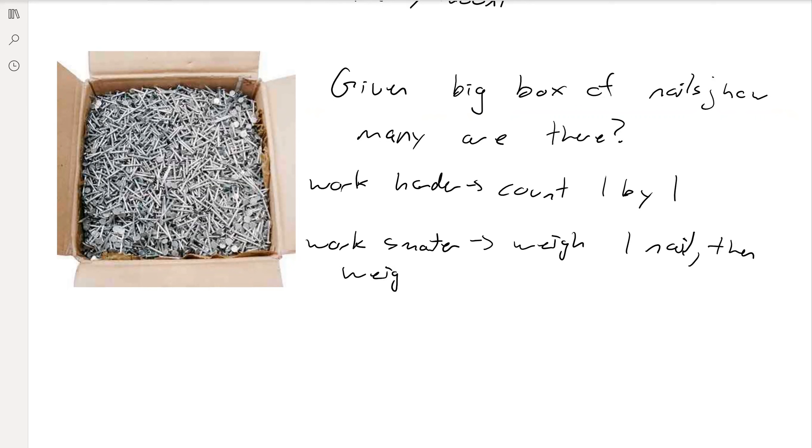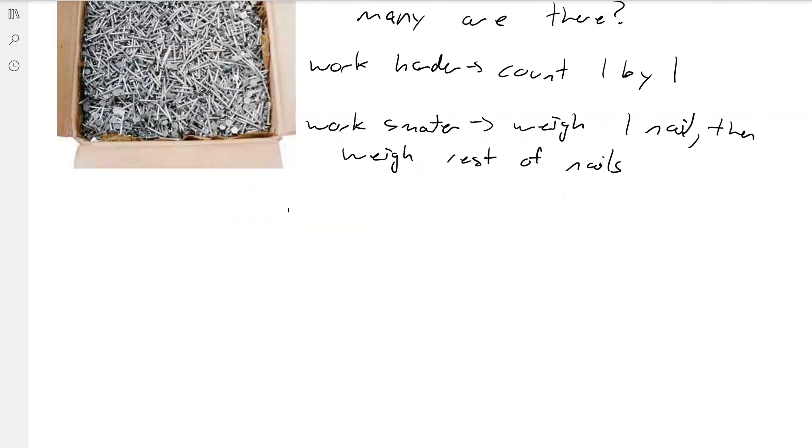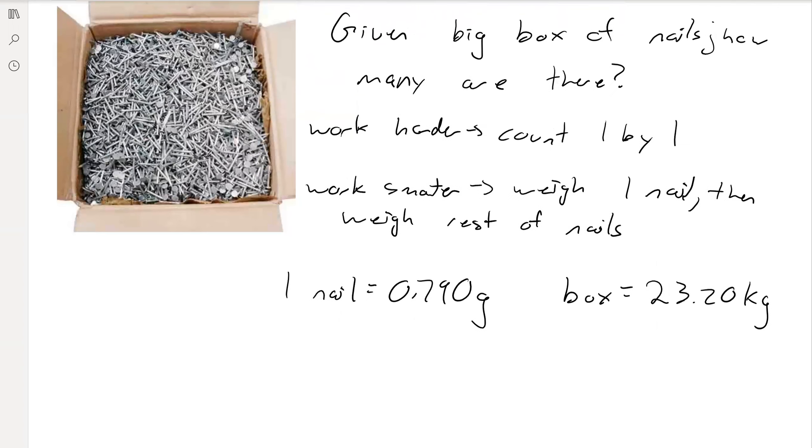So let's say you weigh one nail. And it equals 0.790 grams. And then you weigh the box of nails, subtract out the mass of the box, obviously, and it weighs 23.20 kilograms. Then from that, you can simply calculate how many nails there are.